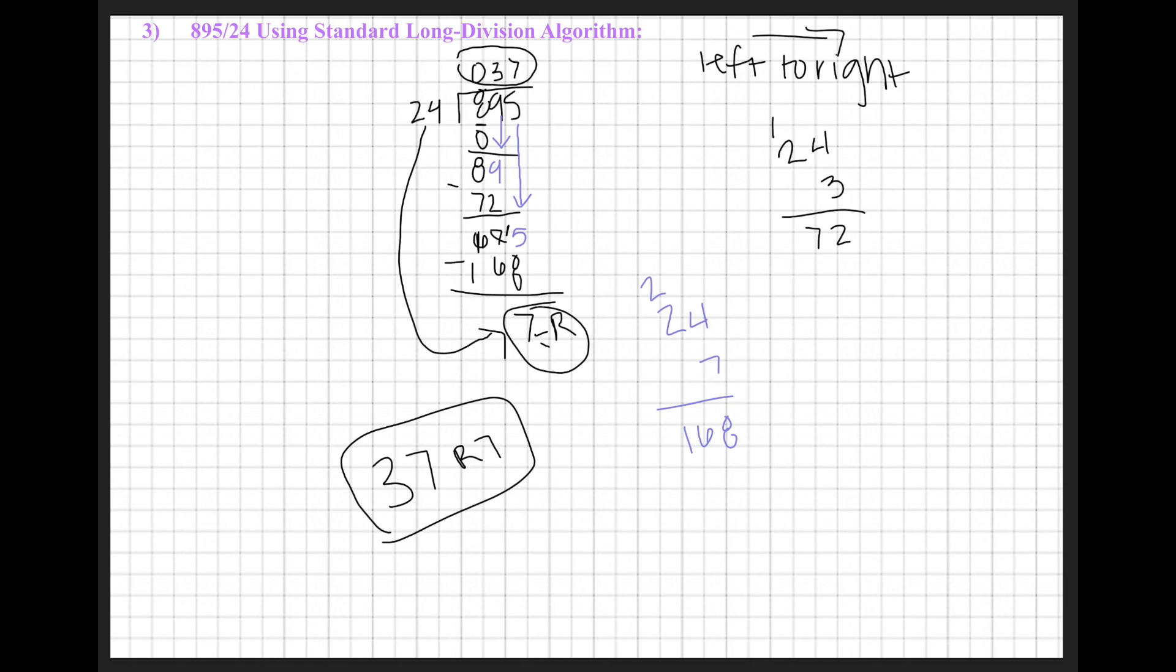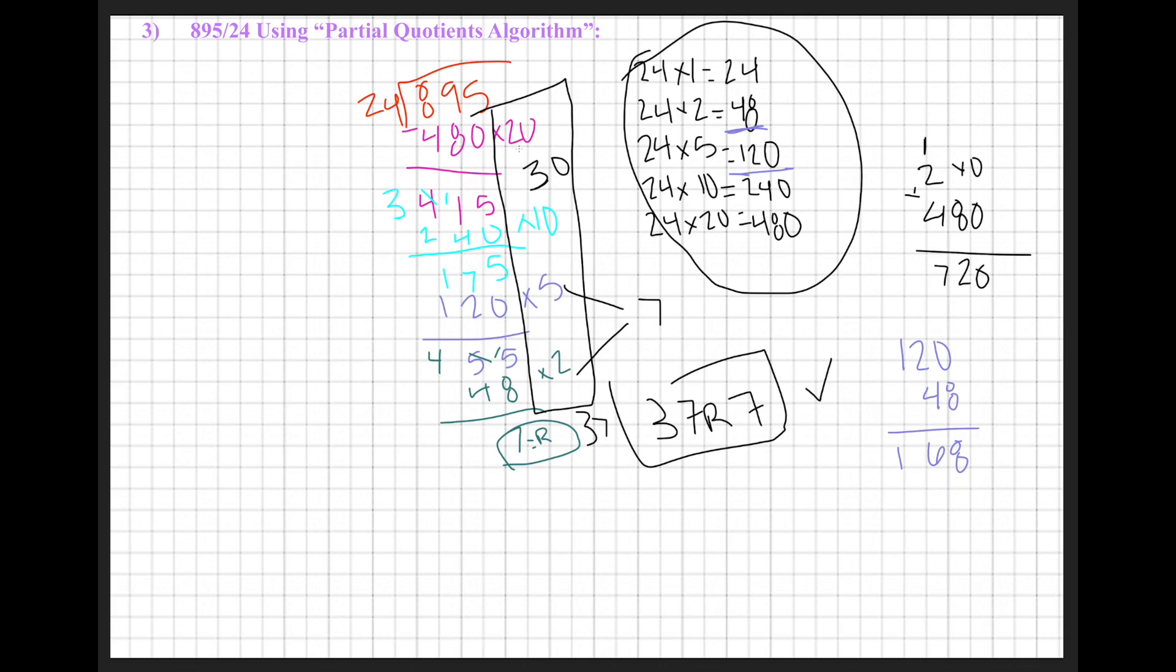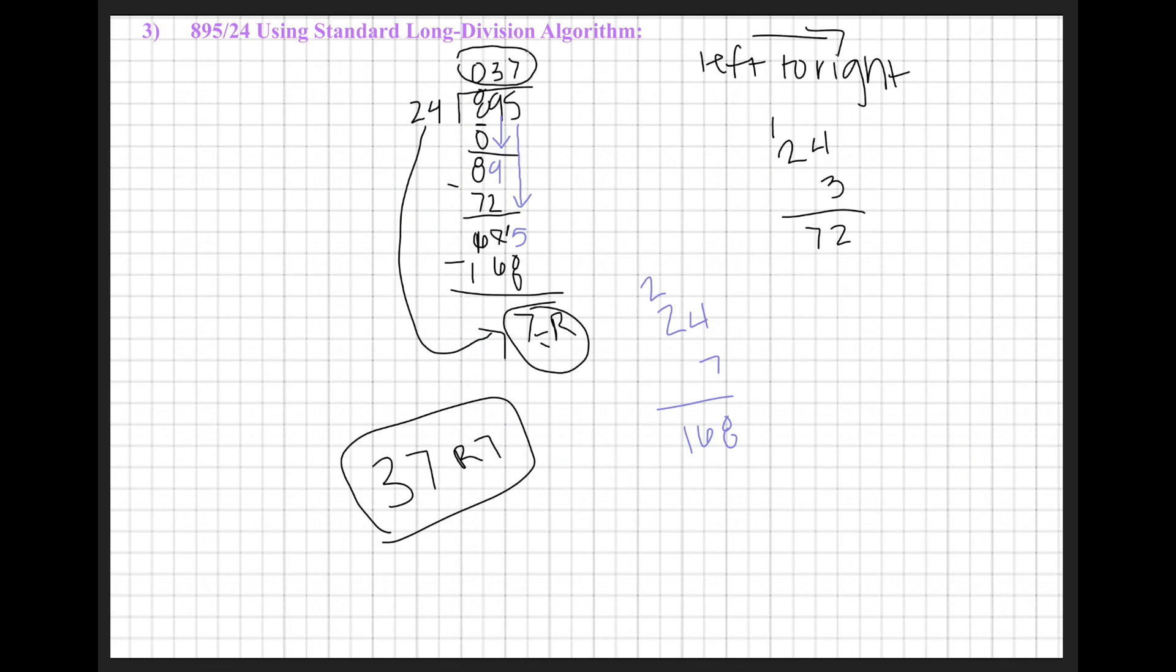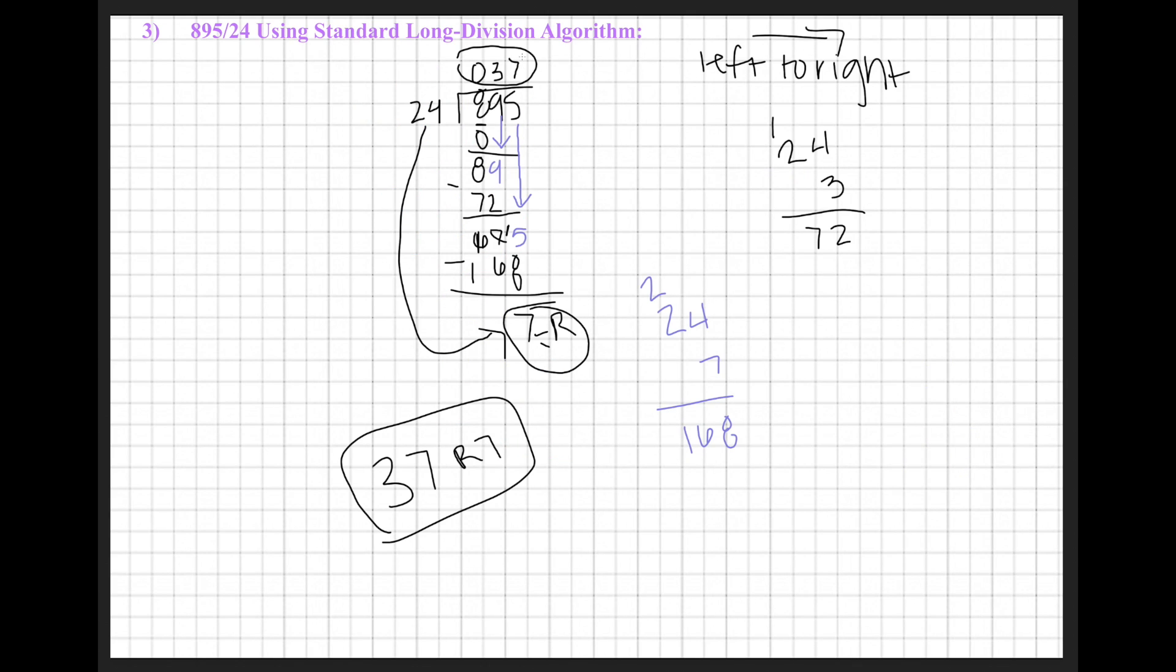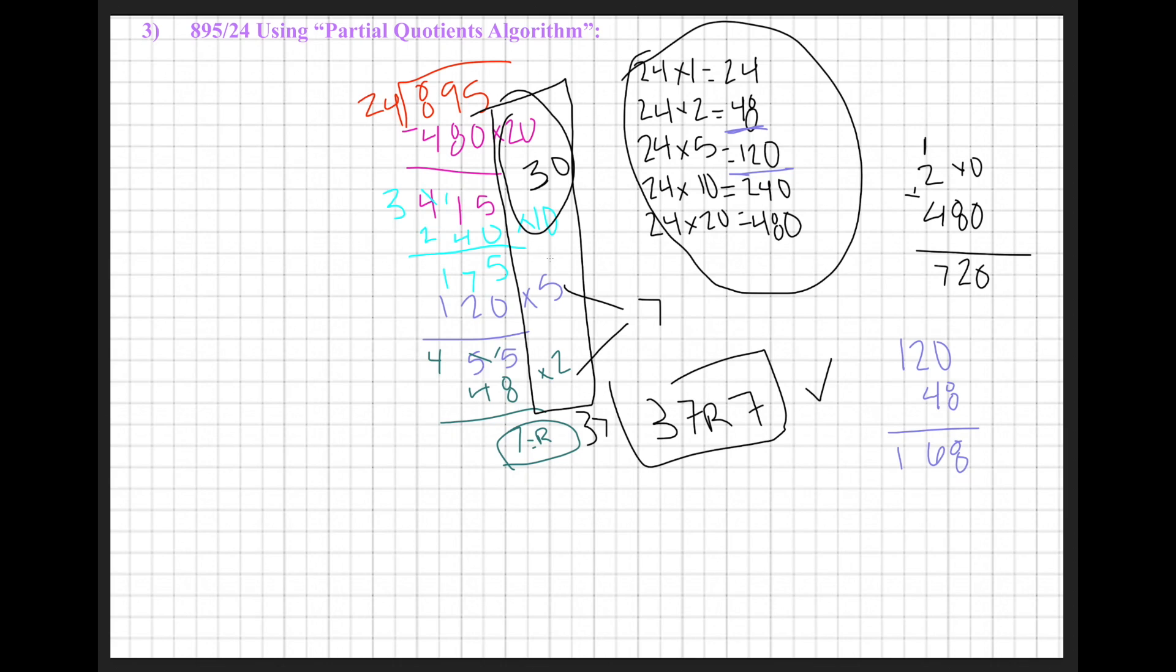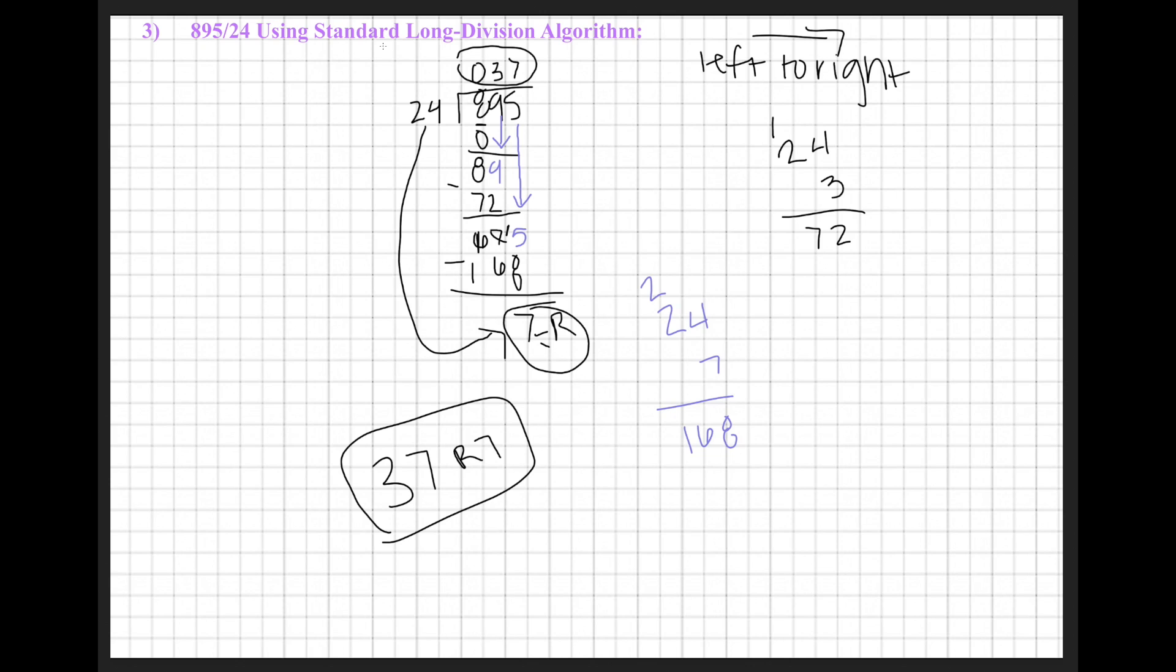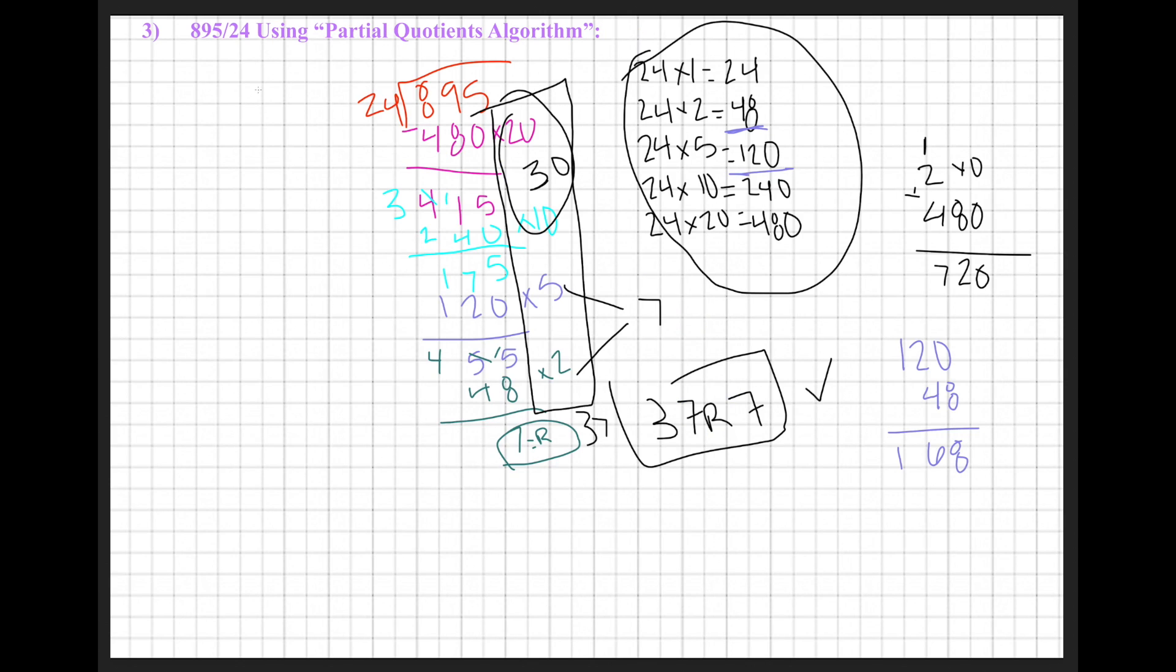So this kind of just shows you how the two are similar. In this case, we broke everything down, all the multiples, so we first did times 20, times 10, times 5, times 2. In this case, in the standard long division, we did 3 for 30, which was both of our 10s groups that we multiplied 24, and then we did 7, which were our 1s groups of multiples 5 plus 2. So in the end, these two are really similar.